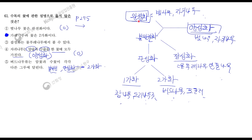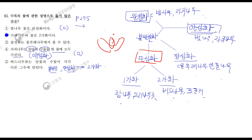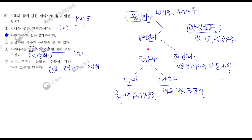불완전화는 네 가지 중 하나가 결여되어 있는 상태를 보고 불완전화라고 합니다. 그 밑에 단성화와 잡성화로 나누어집니다. 단성화는 암술과 수술 중 한 가지만을 갖는 거예요. 꽃이 사실은 암술과 수술을 모두 가지고 있어야만 완전화라고 할 수 있는데, 이 중에 한 가지만 갖는 것을 보고 단성화라고 합니다. 그리고 잡성화는 양성화 꽃이 피기도 하고 단성화 꽃이 피기도 하는 나무, 그것이 한 그루에 나는 나무를 보고 잡성화라고 합니다.